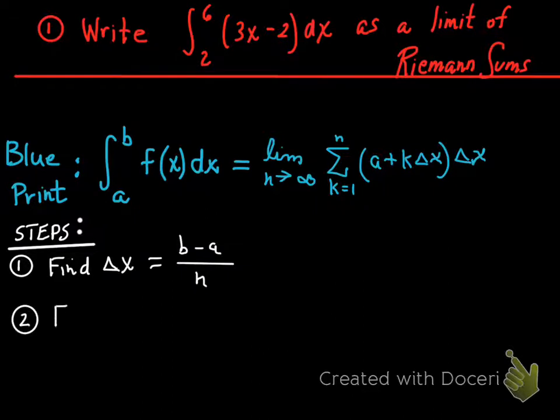Step two. You got to find a plus k delta x. The a comes from that lower limit of integration. K is going to remain put so you'll see the letter k in your expression and delta x is just stolen from what you found in step one.